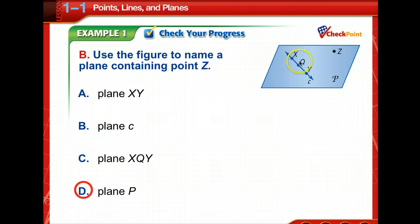How about this one? Use the figure to name a plane containing point Z. And the easiest way to name this from the choices are plane P. Very good. So let's look. XY, nope, it takes three points to name a plane. So that's not enough. Plane C, nope, that's naming the line. And plane X, Q, Y, nope, they are collinear. It takes the one that's non-collinear to name the plane. So that's why the other three do not work.